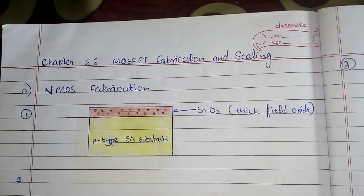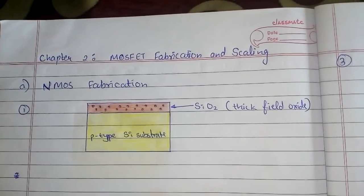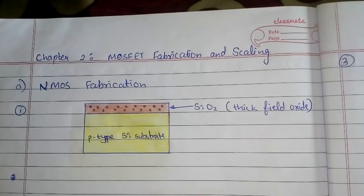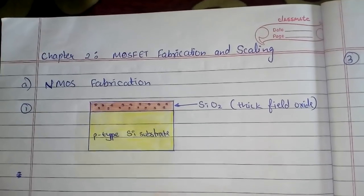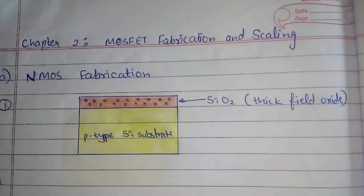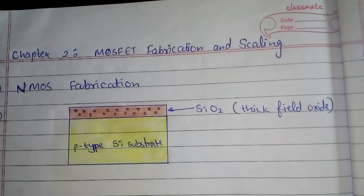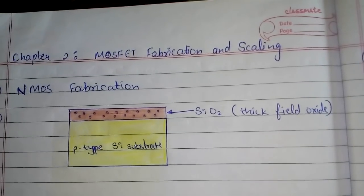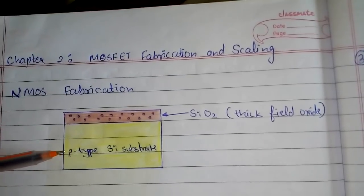In this video we are going to see MOSFET fabrication and scaling — this is part two of chapter two. I'm going to cover NMOS fabrication and then tell you about PMOS and CMOS fabrication. For NMOS, the first thing to understand is that we need a substrate of silicon. Since we are making NMOS, this substrate must be of p-type.